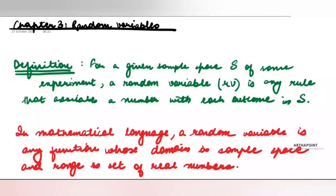Good afternoon. In today's lecture, I'm going to begin with the concept of random variable. We have already understood what probability is and how to measure probability under various scenarios. We have also talked about conditional probability. Now, after we understand probability, the next aim is to understand how we measure the probability of a random variable — but first, we must understand what a random variable is.